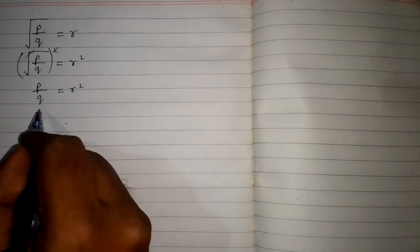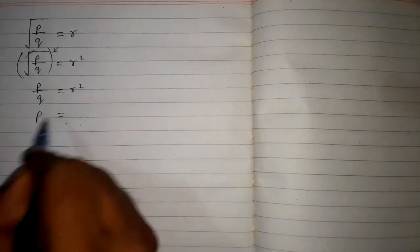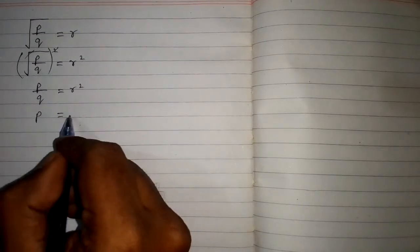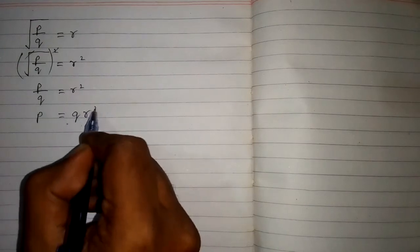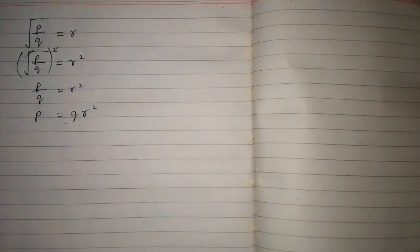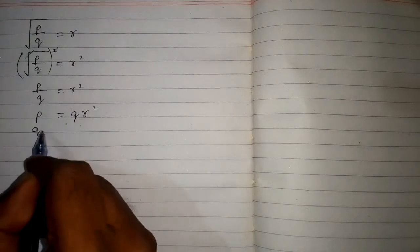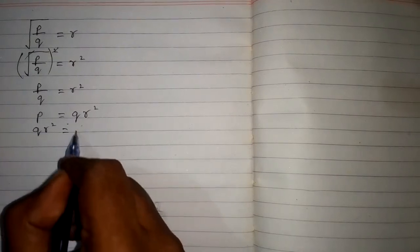Now we can take this Q on the other side of the equation, so this will be multiplied by R square because Q is dividing on this side. We can write this equation as Q R square equals P.